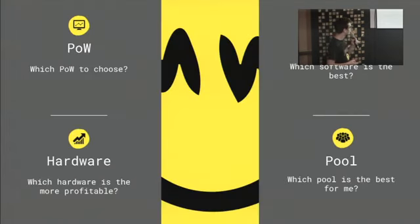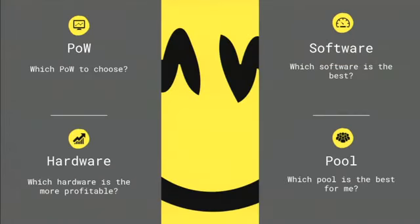We'll be talking about four things. First will be the proof of work — as you might know, Grin uses two proofs of work, which are primary and secondary, and we'll talk about which one you need to choose. After that, we'll talk about hardware and which is most profitable, then mining software and pool software. Which mining software you need to use based on several parameters, and which pool is the best for you. At the end of the talk, you can ask questions.